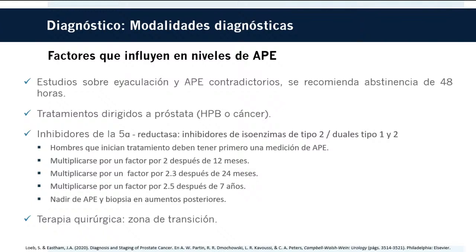Debido a que este objetivo móvil puede complicar el uso del antígeno en la práctica clínica diaria, algunos autores recomiendan utilizar el nadir del antígeno en finasterida como nueva línea de base y realizar biopsia dirigida en pacientes en los que se detecte un aumento secuencial. La terapia quirúrgica para hiperplasia prostática benigna también puede reducir los niveles de antígeno al eliminar la zona de transición, principal contribuyente de su producción, que es diferente a la zona periférica donde se forman la mayoría de los cánceres.